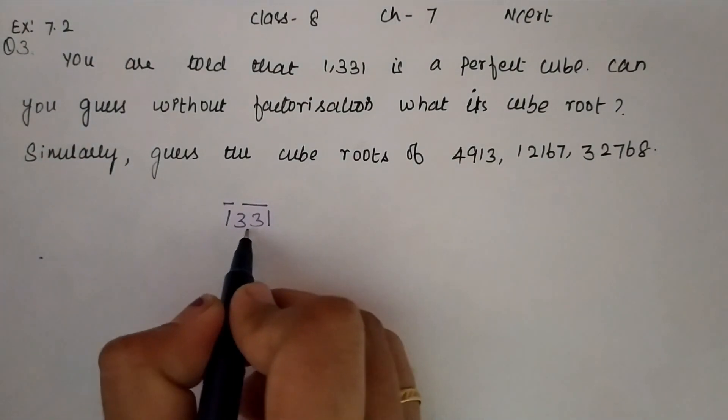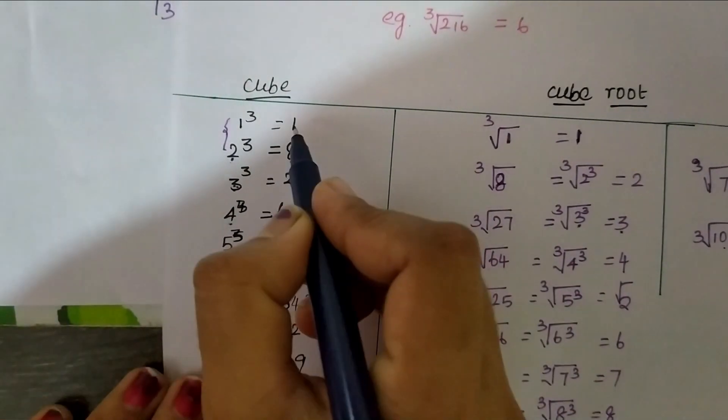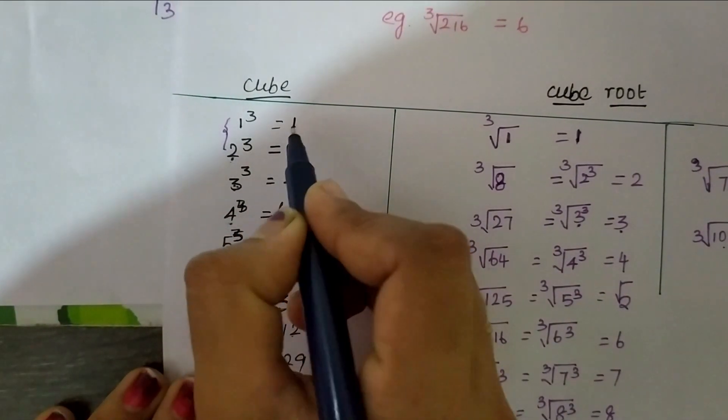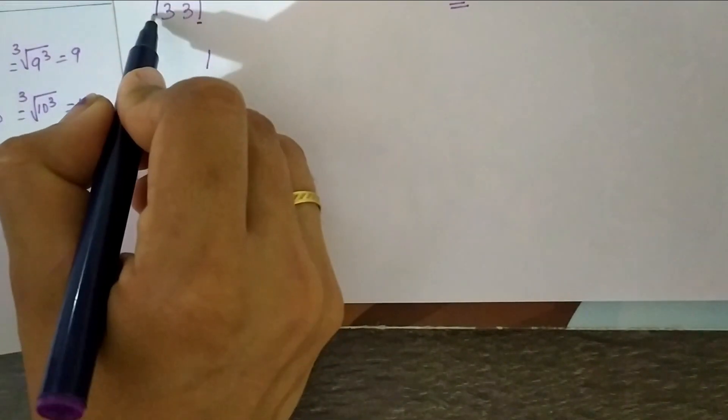Now, check the unit's place of this first group number. It is 1. Now, we will check this cube. This number has 1 in its unit's place. Its corresponding cube number is 1. So, write it here 1 and here we have 1.